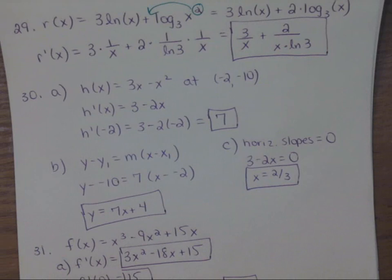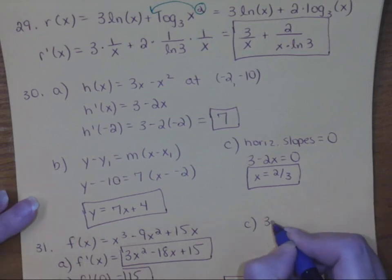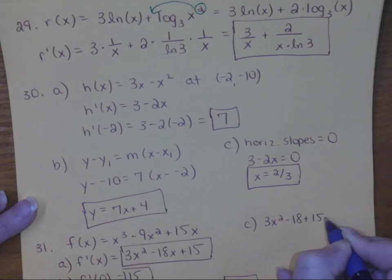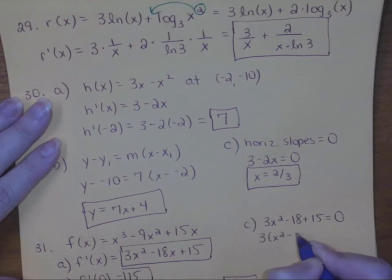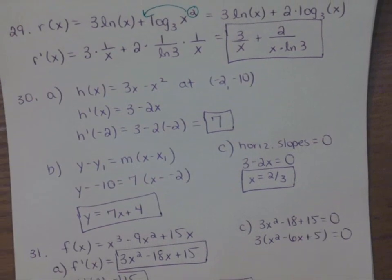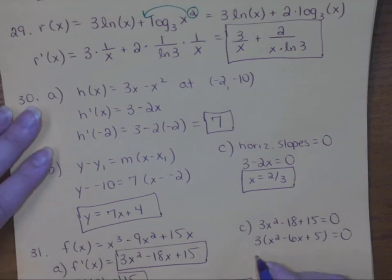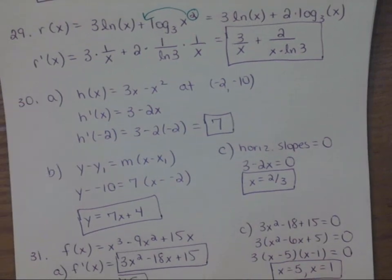Part c says find the times when the velocity is 0 — time is x in this problem — so set the derivative equal to 0. These terms all have a 3 in common, so factor that out first, then the remaining expression factors into (x minus 5)(x minus 1). So there are two answers: at x equals 5 and x equals 1 the derivative is 0, meaning the velocity is 0 at both times 1 and 5 seconds.